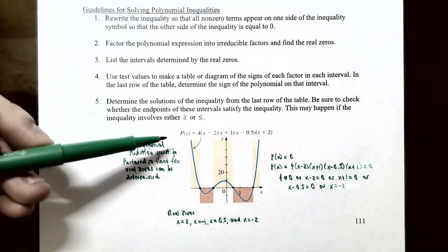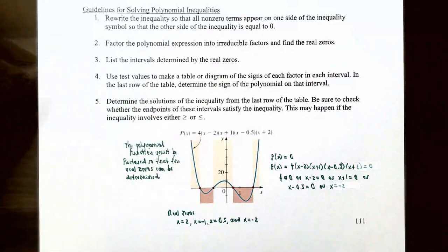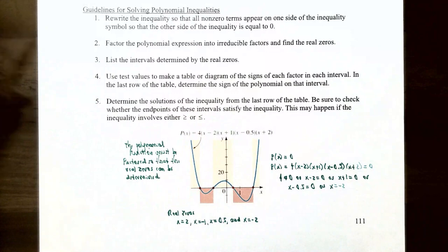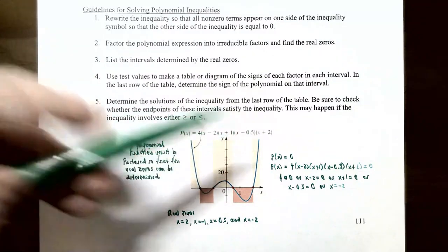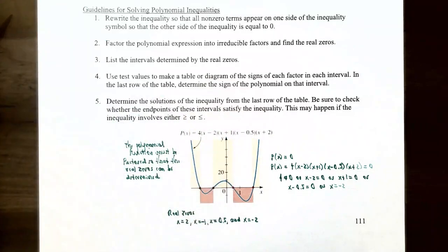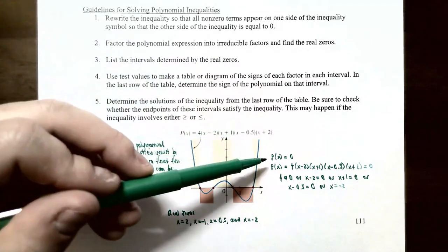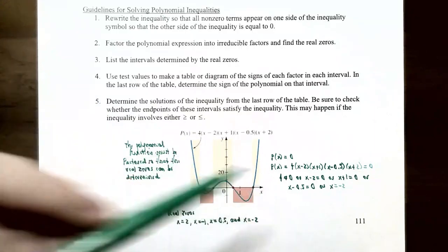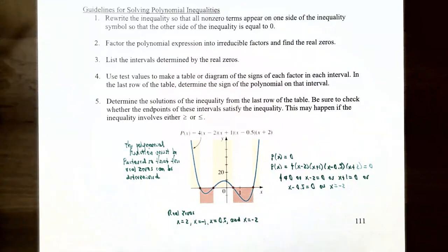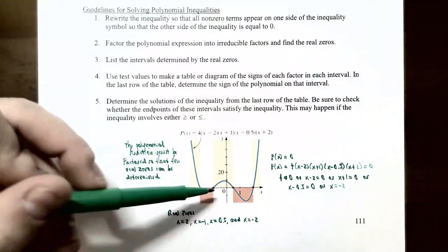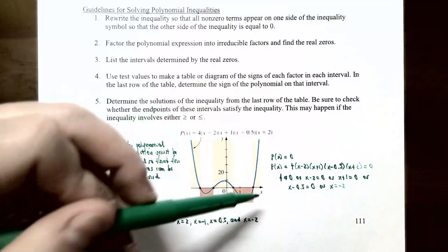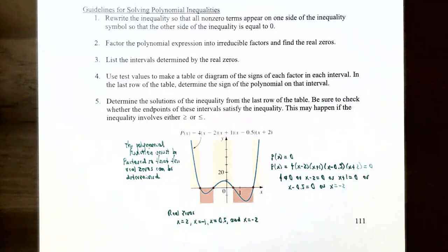Graphically, consider a polynomial function p(x) equal to 4(x−2)(x+1)(x−0.5)(x+2). The real zeros are x=2, x=−1, x=0.5, and x=−2, corresponding to x-intercepts at (−2,0), (−1,0), (0.5,0), and (2,0). These real zeros divide the number line into sub-intervals: x<−2, between −2 and −1, between −1 and 0.5, between 0.5 and 2, and x>2. On each sub-interval, the graph is either entirely above or entirely below the x-axis.